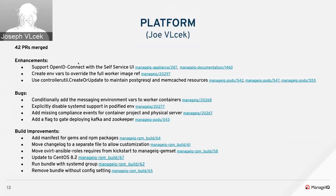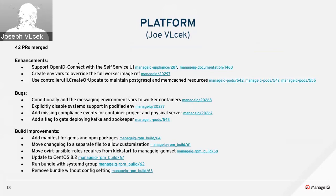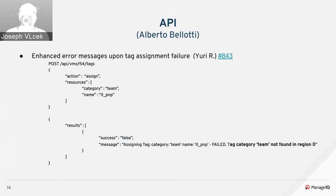For bugs: a change was contributed to handle a missing Kafka secret; systemd support is now completely disabled on podified environments; a bug was fixed where project compliance check was missing from container project compliance creation; and a flag was added to gate the deployment of Kafka and Zookeeper on Kubernetes to avoid unnecessary resource consumption. There were also multiple PRs contributed to continue the RPM build work.